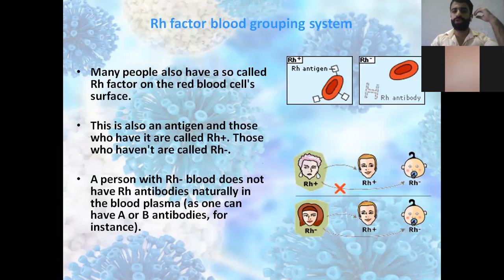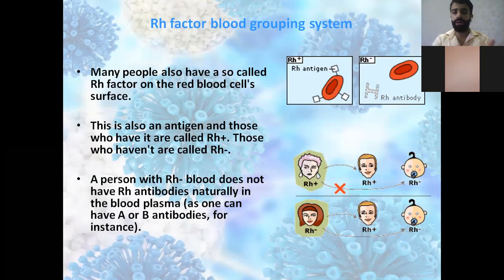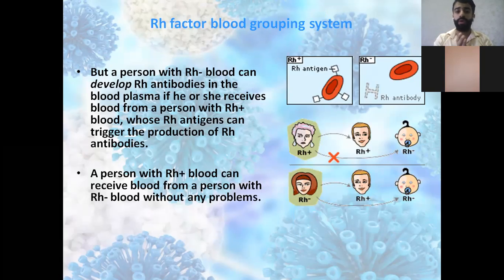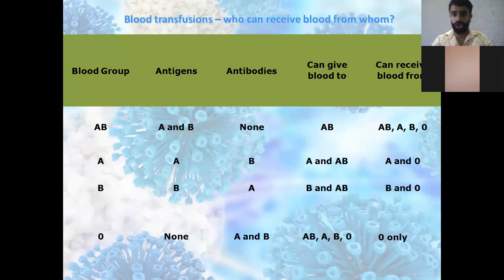Many people also have the Rh factor, which determines whether a person is Rh positive or Rh negative. A person with Rh positive can receive blood from a person with Rh negative without any problems.